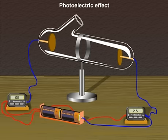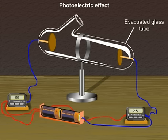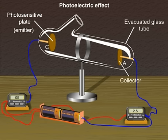Now as you can see, it has an evacuated glass or quartz tube having a photosensitive plate. Let me label it as C. This is known as the emitter, and there is another metal plate A which is known as the collector.